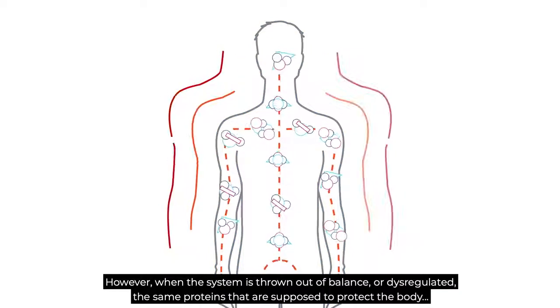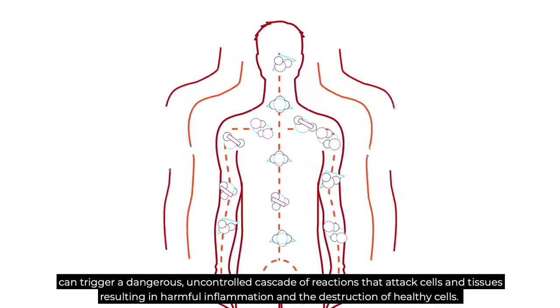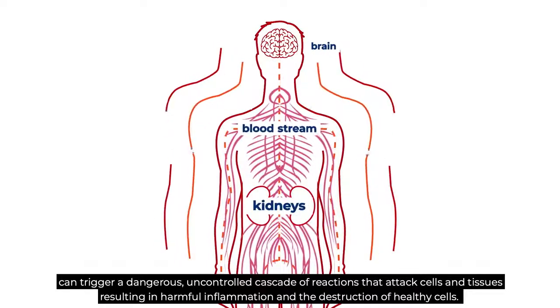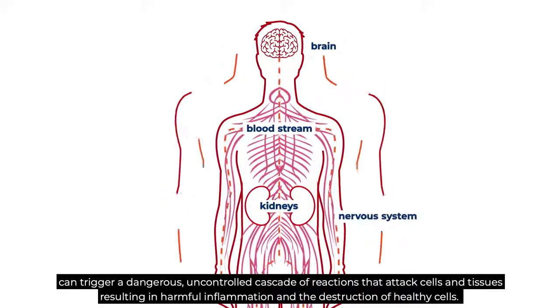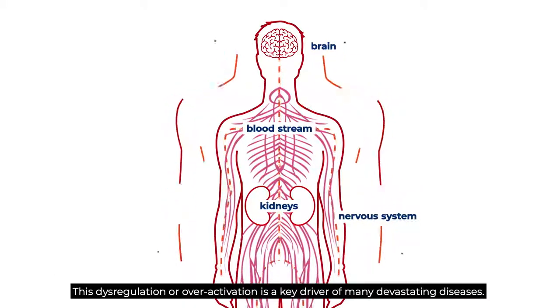The dysregulated complement system can attack cells and tissues, resulting in harmful inflammation and the destruction of healthy cells. This dysregulation or overactivation is a key driver of many devastating diseases.